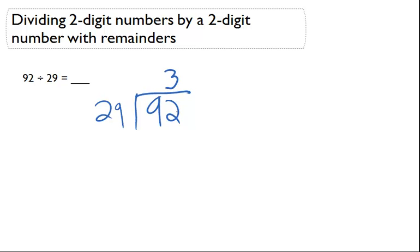If I do that three times, three times 29 is actually going to give me... three times 29 is 87. I'm going to put 87 here.